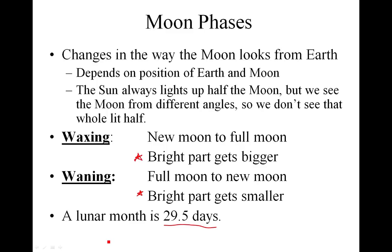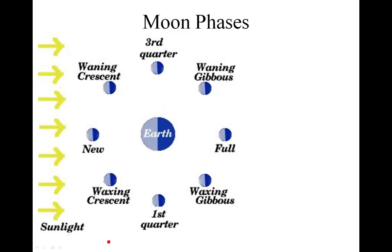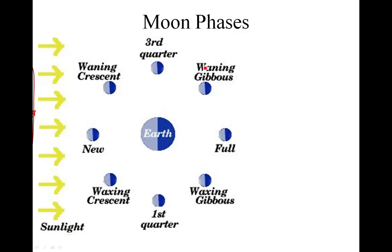So let's get on to what it looks like and why it looks like it does. You have a picture in your notes that looks similar to this. The arrows on the left represent sunlight, so the sun is over here on the left. This is the Earth, and this is the moon going around the Earth — going from new moon to full moon and then all the way back to new moon. It takes 29 and a half days to go through the whole cycle.